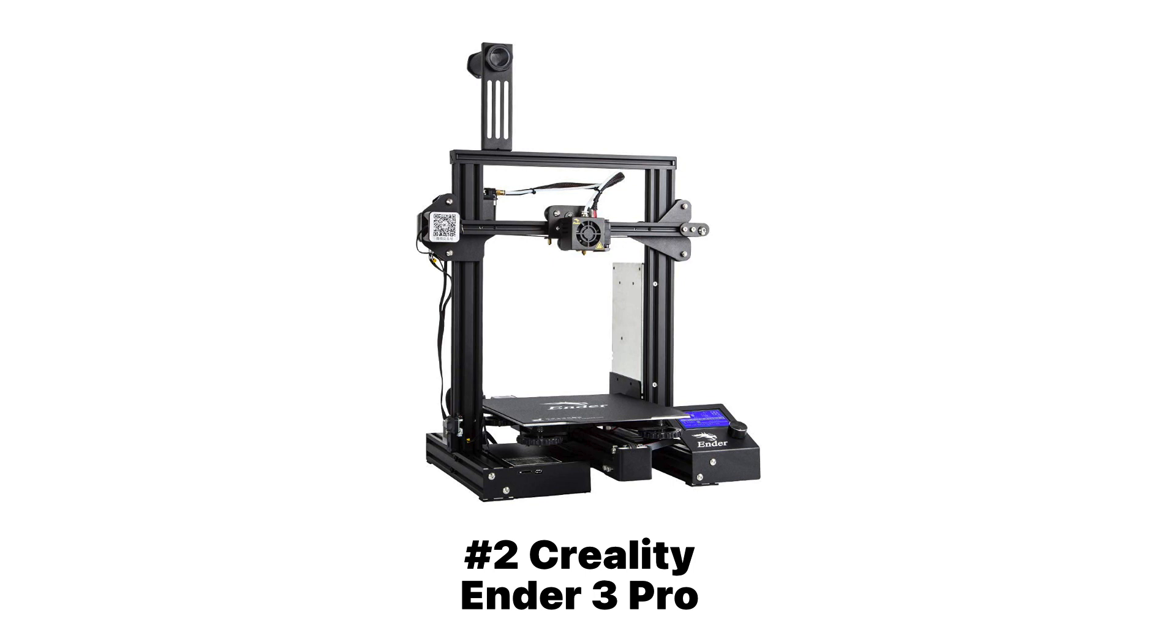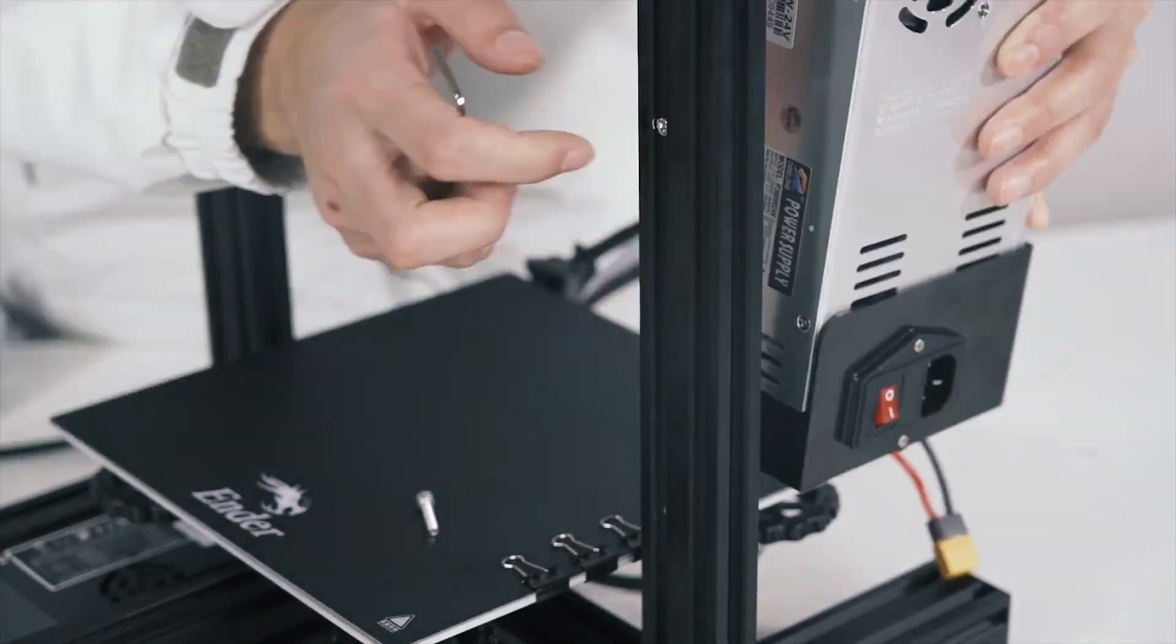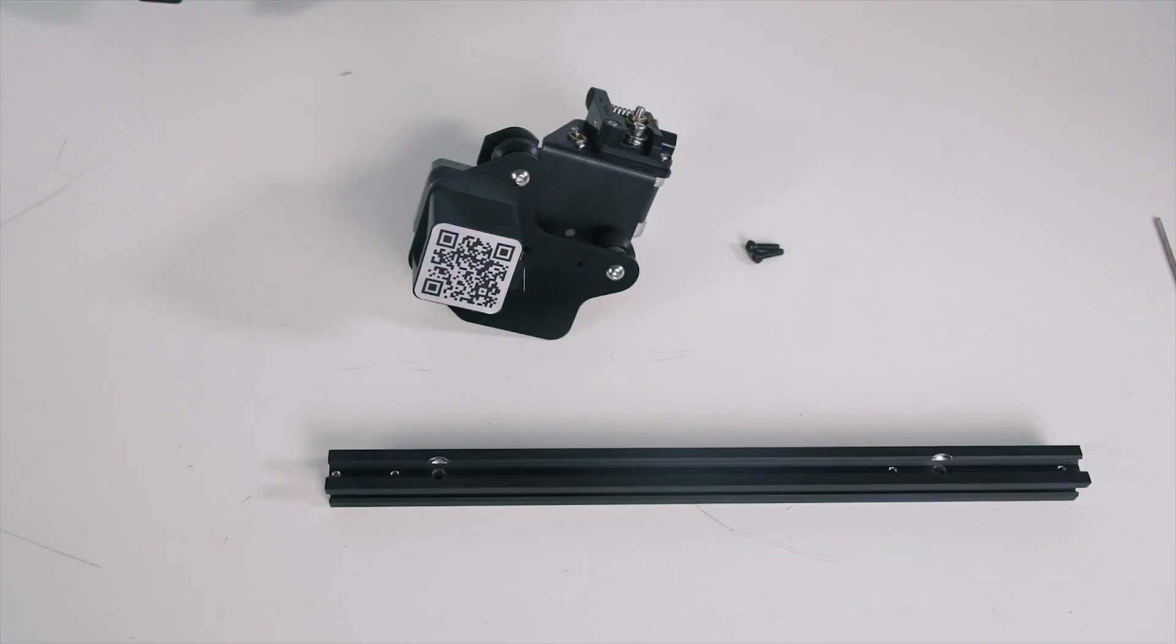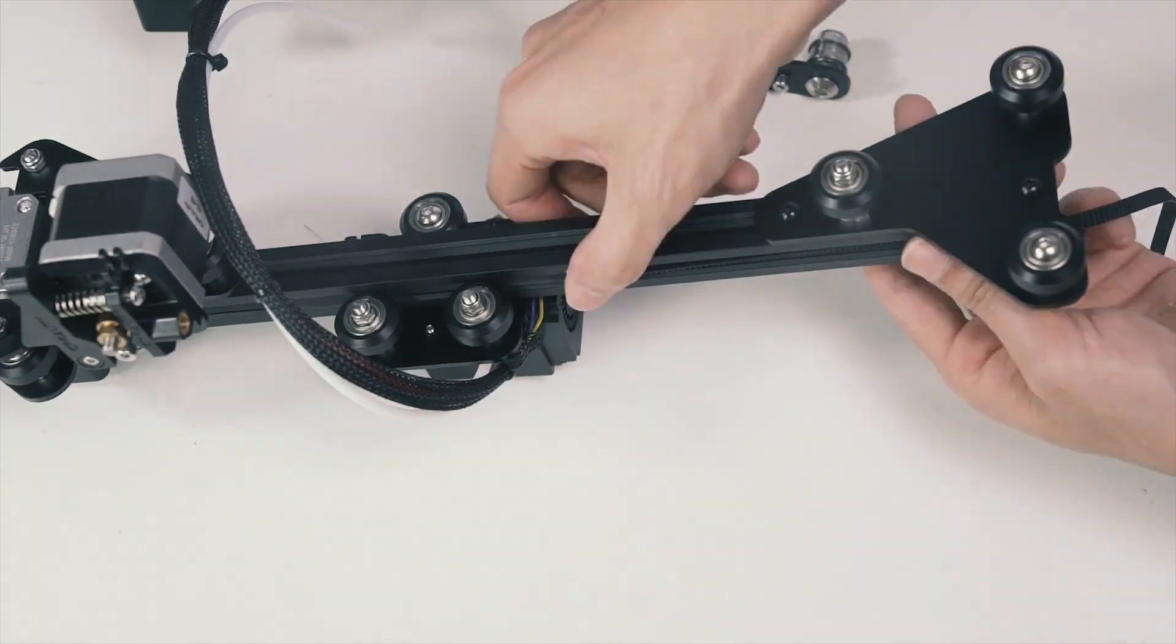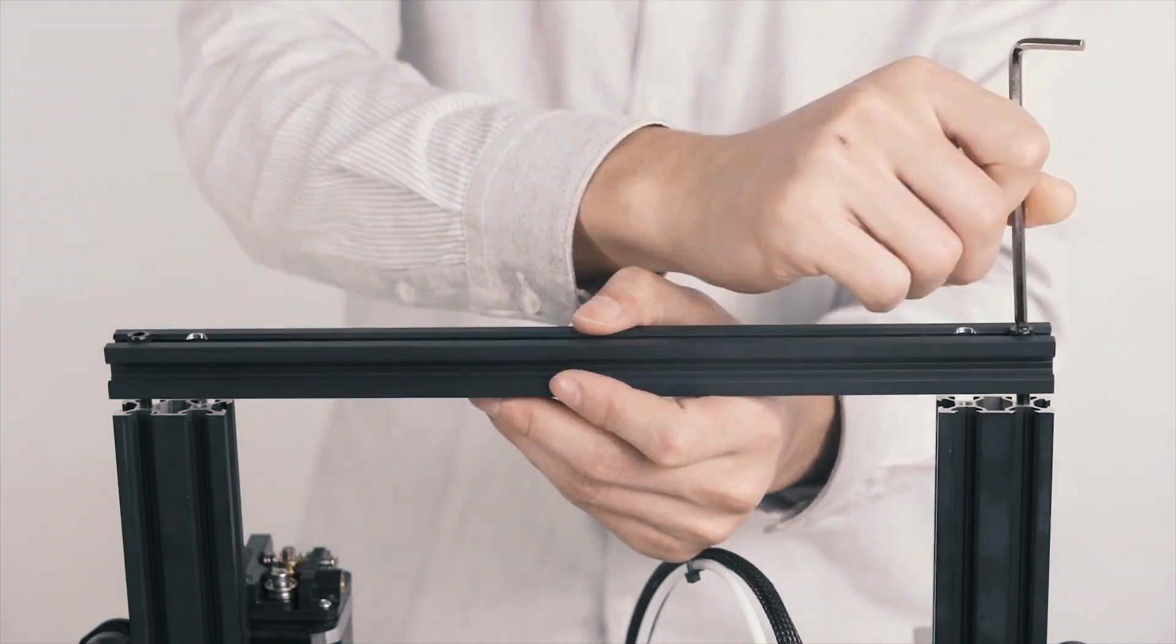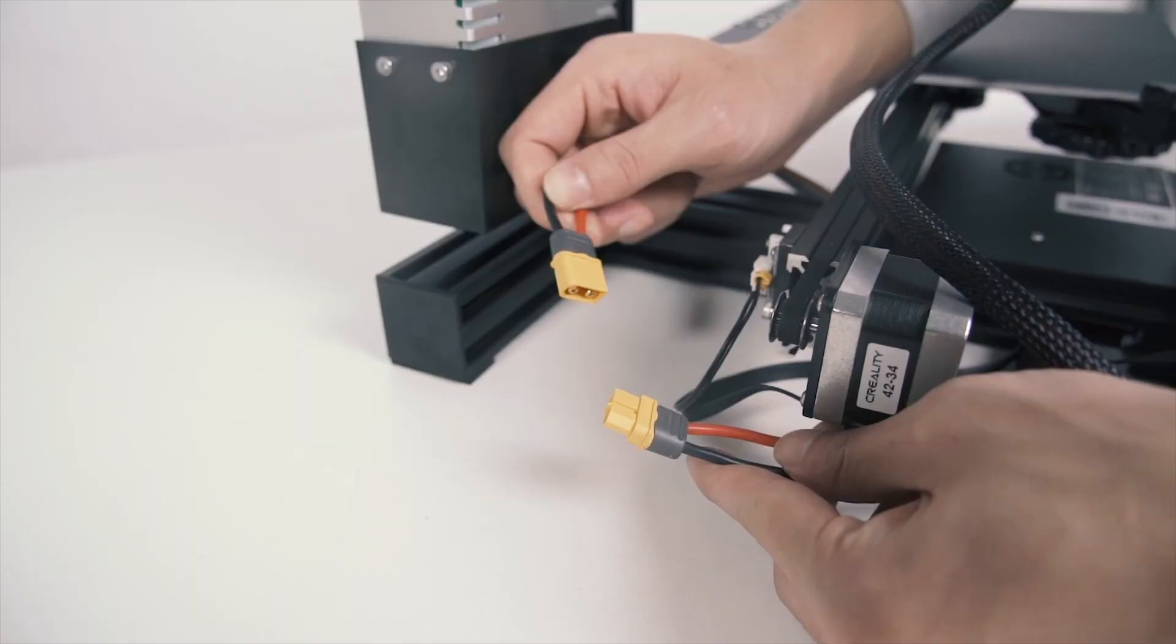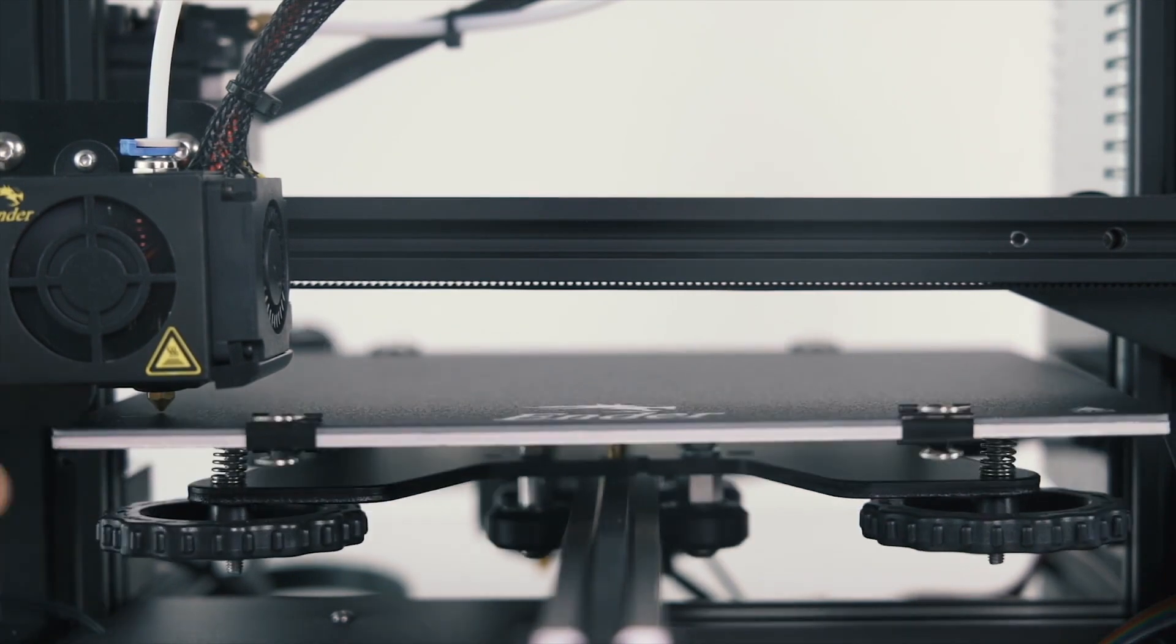Next on the list we have the Creality Ender 3 Pro. This is a good option if you don't want to spend a lot of money. It's a really great budget 3D printer. The Creality Ender 3 does require a good amount of assembly. It'll usually take about 1-3 hours to assemble. You can get a Creality Ender 3 for about $200 USD, and if you're lucky you could find a really great deal for only $99. The Creality Ender 3 is probably the most popular 3D printer of all time. This is because of its really accessible price point.